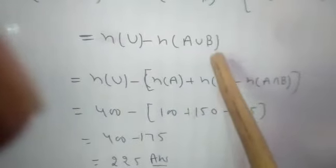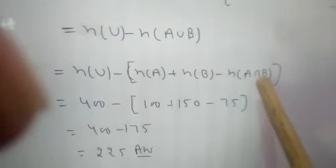n(U) minus n(A union B) using the identity n(A union B) is equal to n(A) plus n(B) minus n(A intersection B).